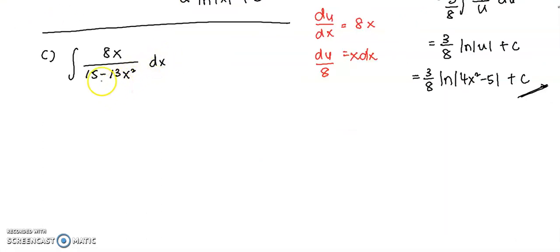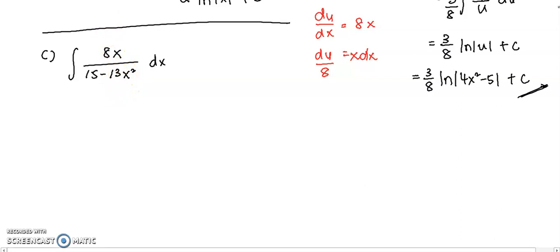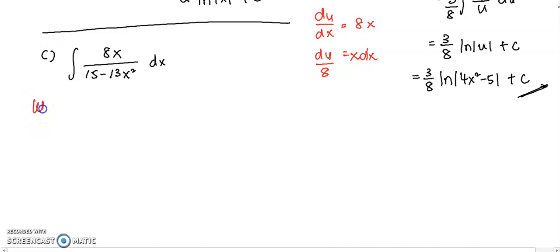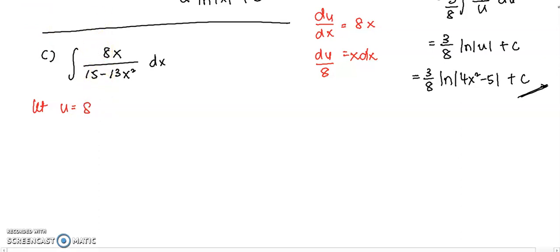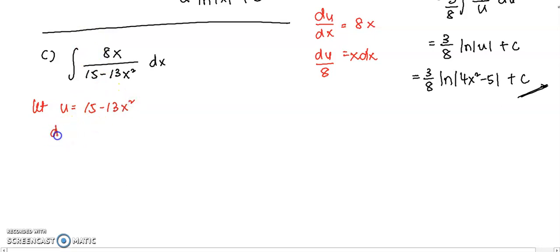Same approach I will apply for question c. Because question c is not in the form of a constant over a linear function — it's a linear function over a quadratic. So for this type of question, similar to question b, I'm going to apply the substitution method. We will let u equal 15 minus 13x².